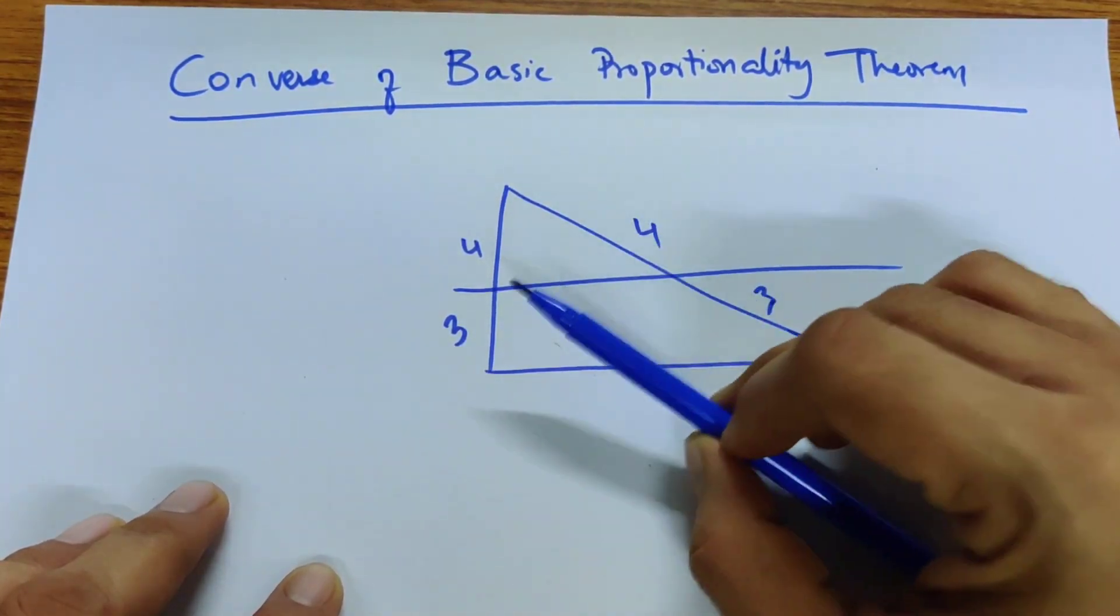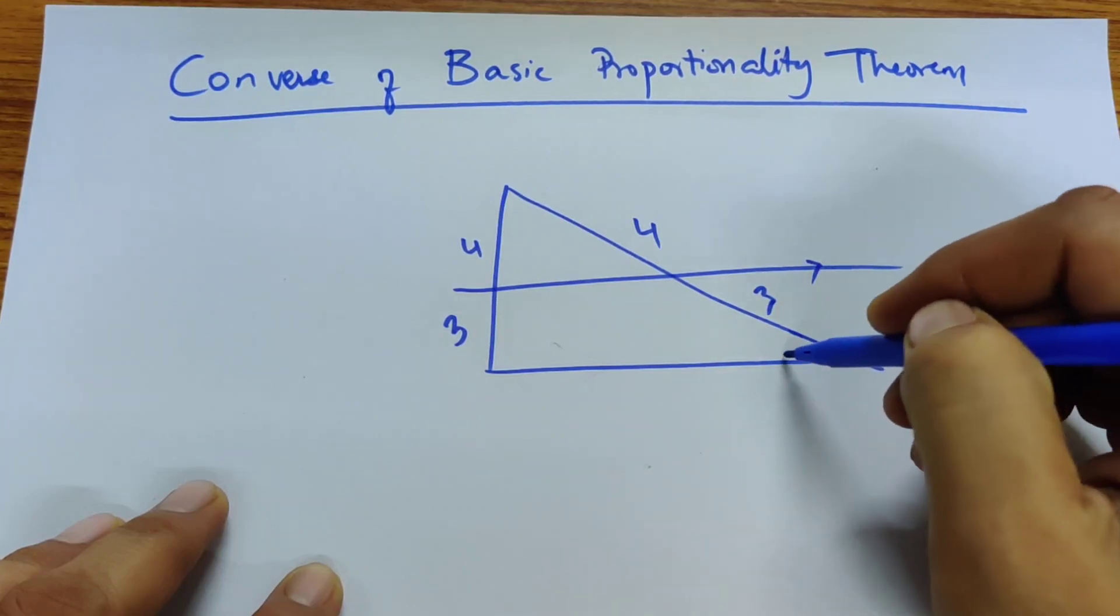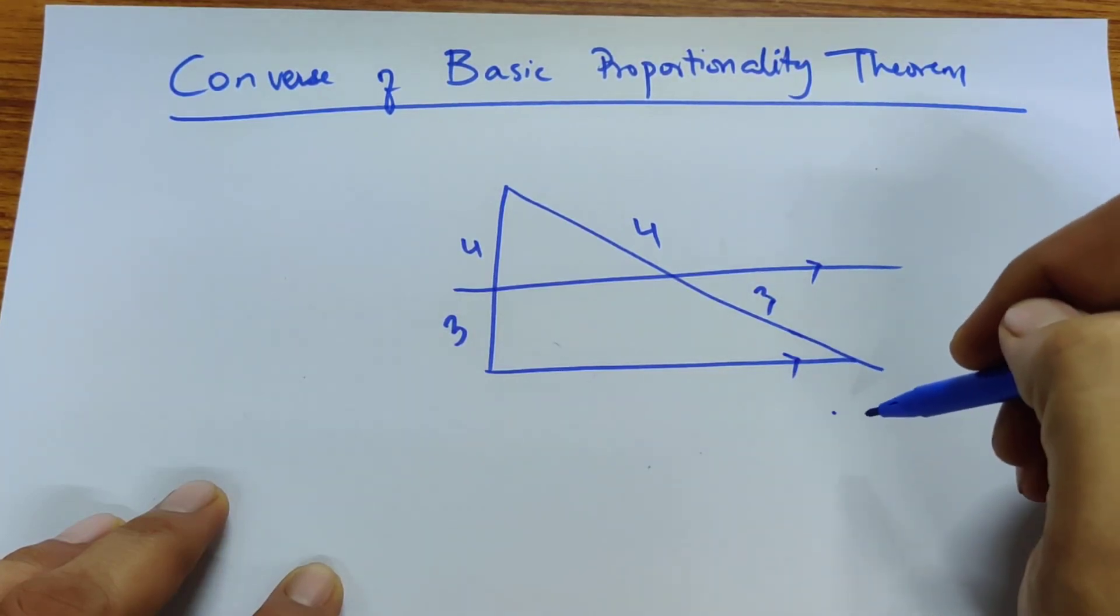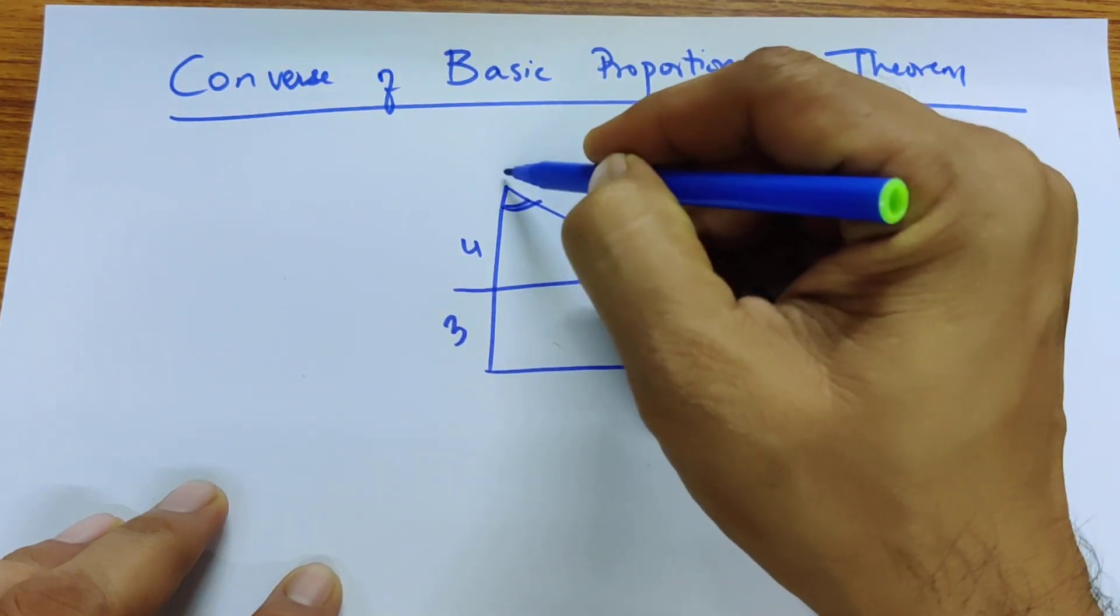you are dividing it in the same ratio. Then to prove that this line is parallel to this line, so in this case, of course, this angle is the same, so let's call it angle A.